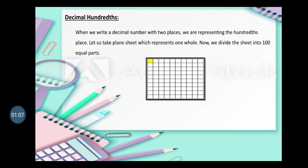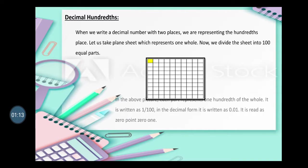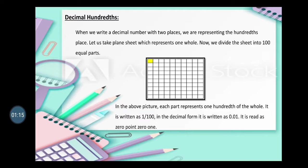We can see that this sheet we have divided into hundred equal parts. In this picture, each part represents one hundredth of the whole, and it is written as one upon hundred. In the decimal form it is written as 0.01.